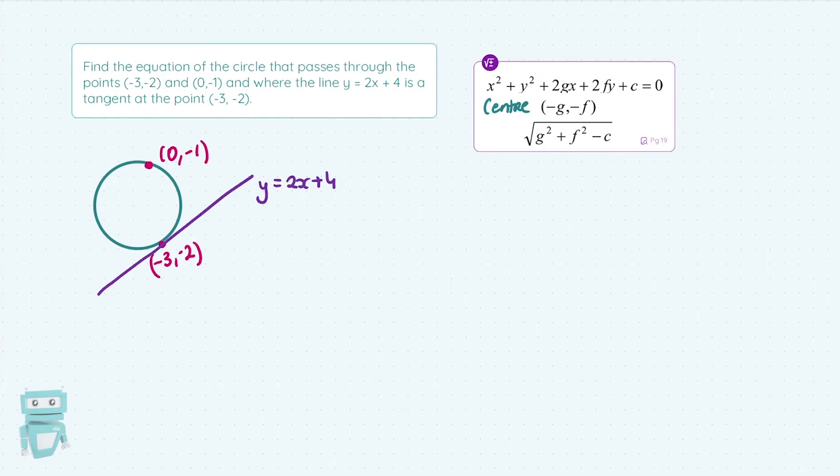Now, if a point's on a circle or point's on a line, the go-to method is sub it in, since it satisfies the equation of a line. So, I'm going to sub in my point (0,1) into this top formula here, the equation of a circle, since that point is on the circle.